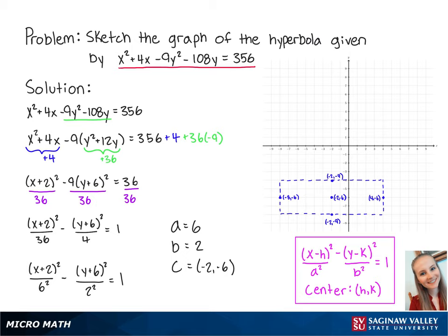The asymptotes of the hyperbola are the diagonals of this rectangle. So the first asymptote is the line y equals negative 1 third x minus 20 thirds, and the second asymptote is the line y equals 1 third x minus 16 thirds.